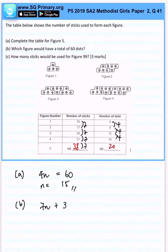The formula here is 7n plus 3. So how many sticks will be used for figure 99? Substitute. Now n is 99, right? So 7 times 99 plus 3.